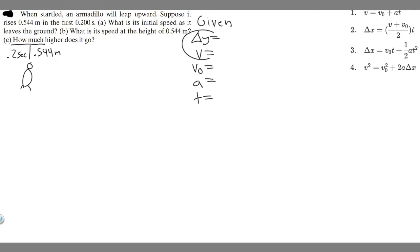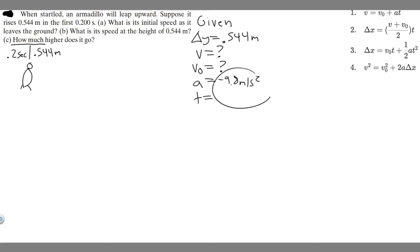We already know delta y — the change in the y component — is 0.544 meters. Do we know the final velocity v? No, that's unknown. Do we know the initial velocity v sub 0? We don't know that either — that's what Part A is asking for. For acceleration a, it's always implied to be minus 9.8 meters per second squared, because that's gravity acting downward. And time t we do know — they tell us it takes 0.2 seconds.